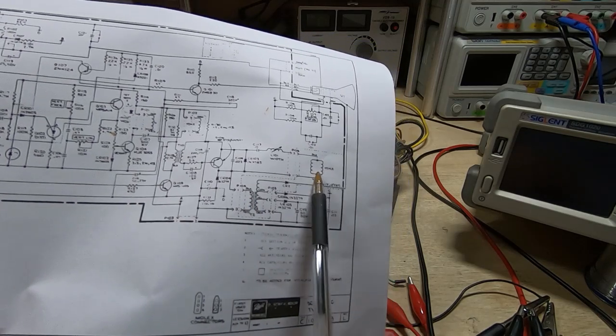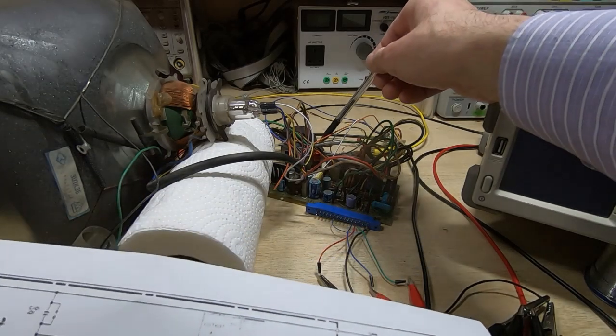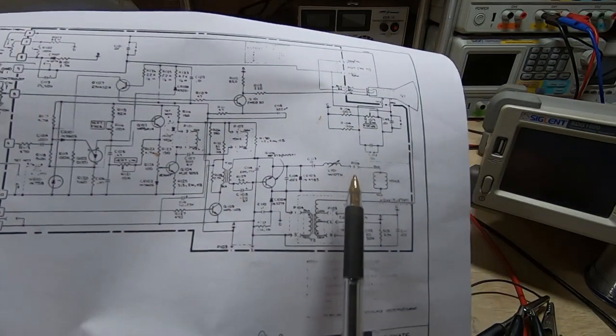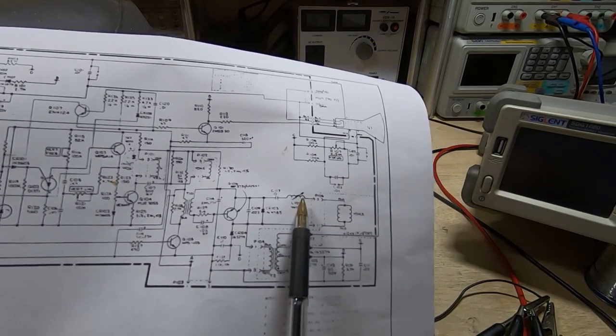There's an adjustable core within the width control that you're supposed to wind in or out to give you the correct width. But the way this works is it kind of stores energy in a certain part of the deflection.